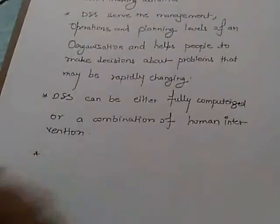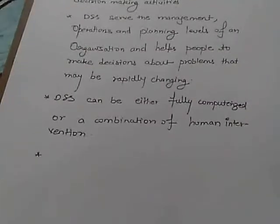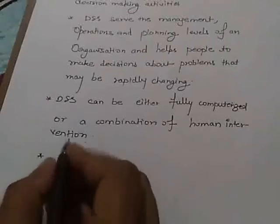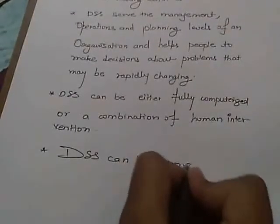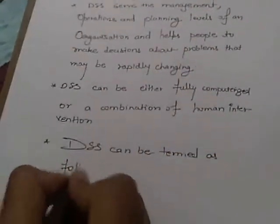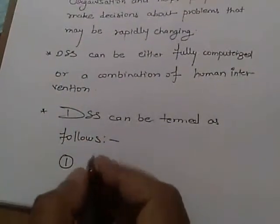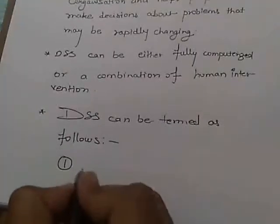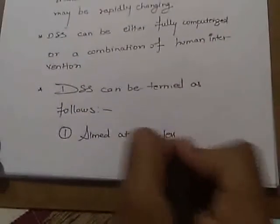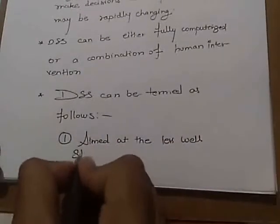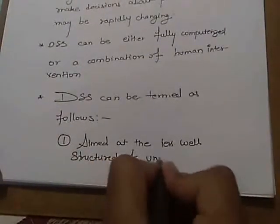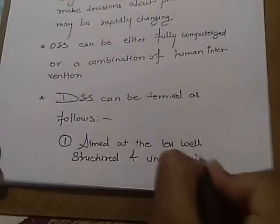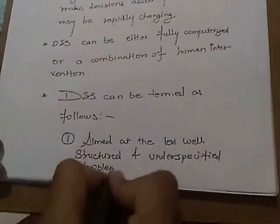Now we have different components of decision-making. In short, a DSS can be characterized as follows. Point number one: DSS tends to be aimed at the less well-structured and underspecified problems.